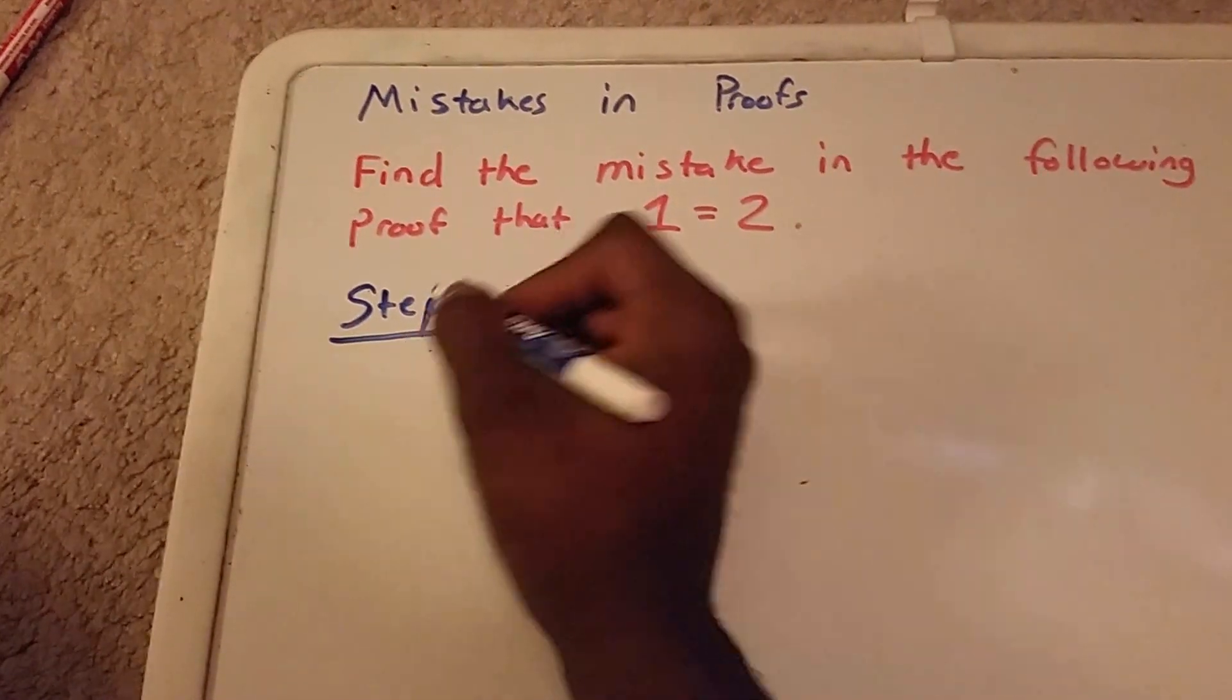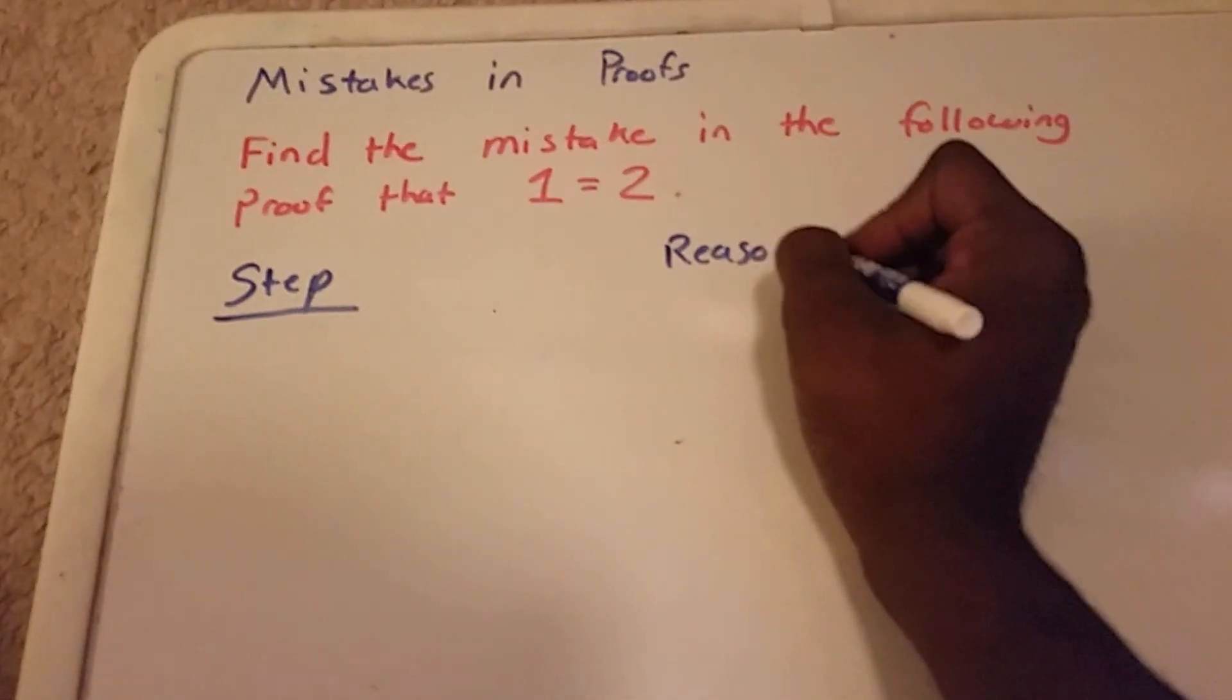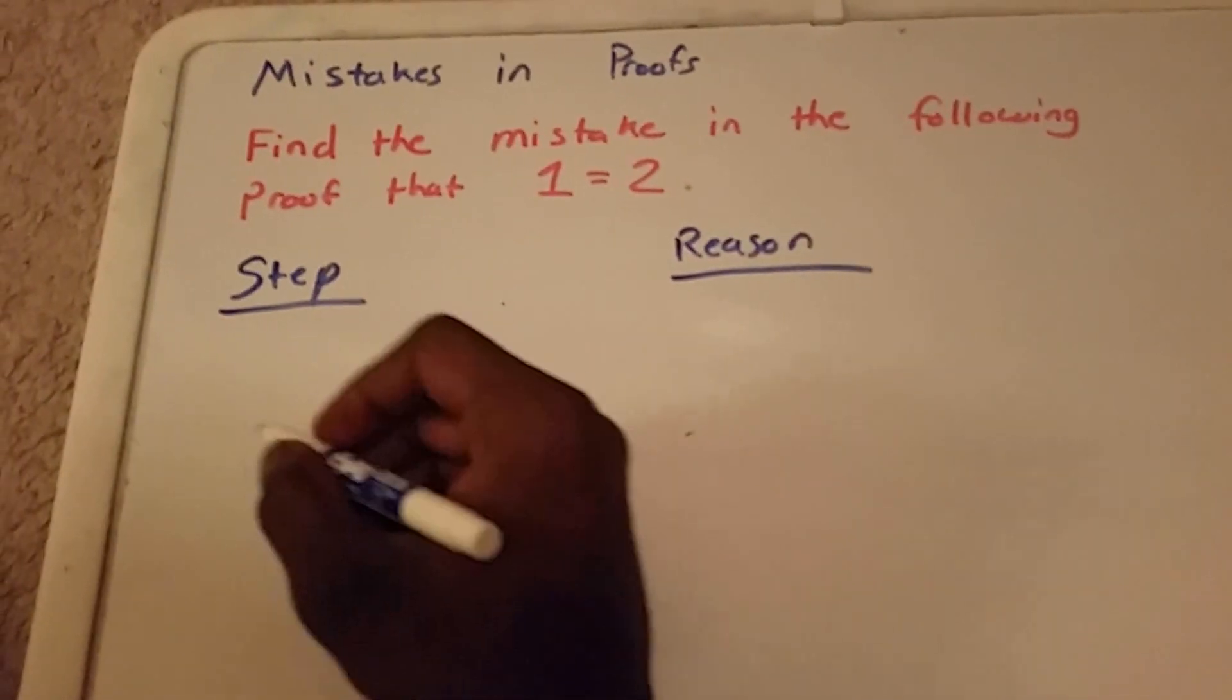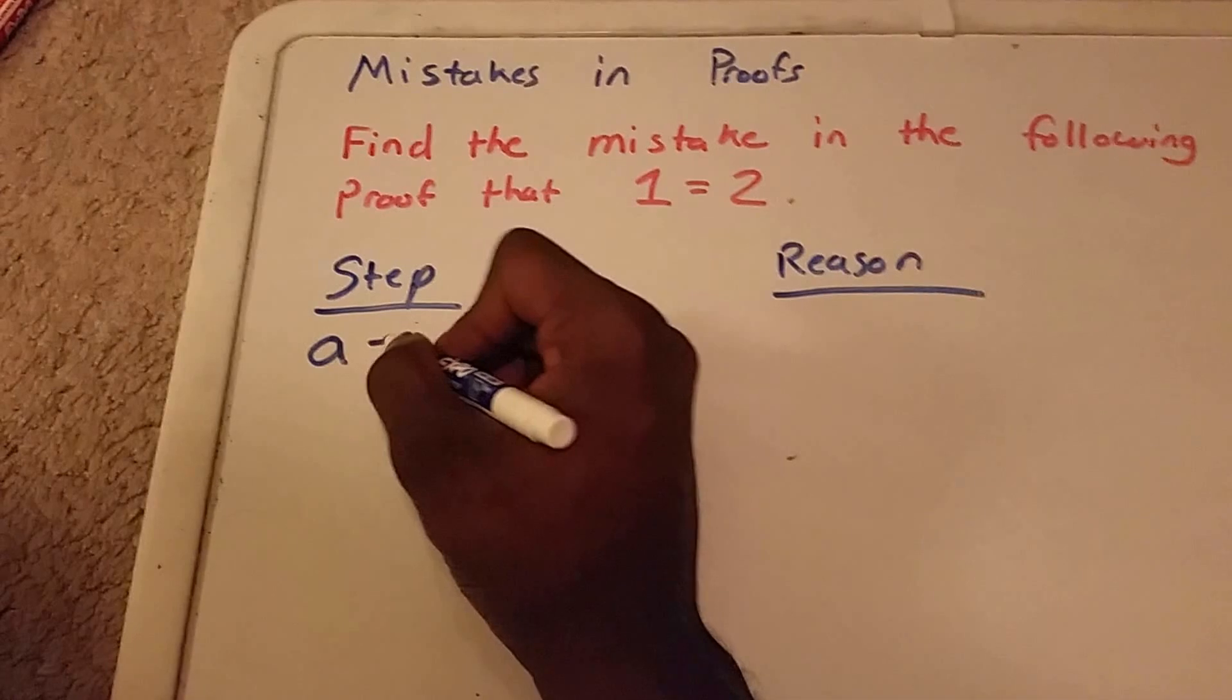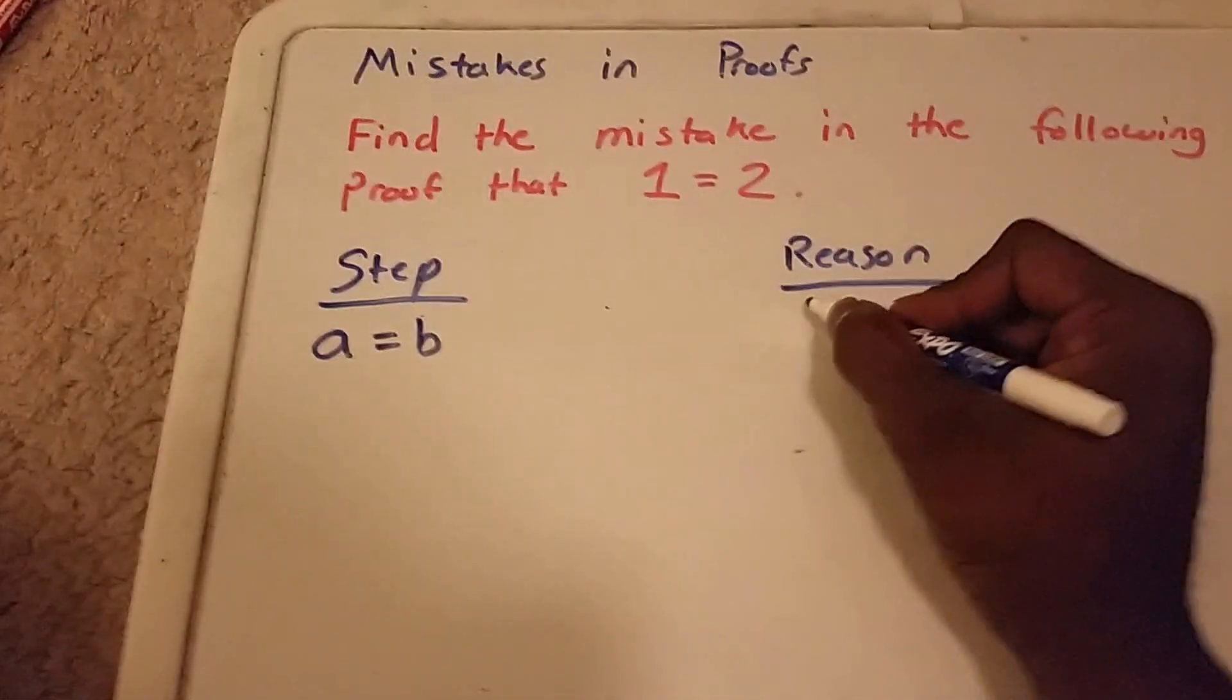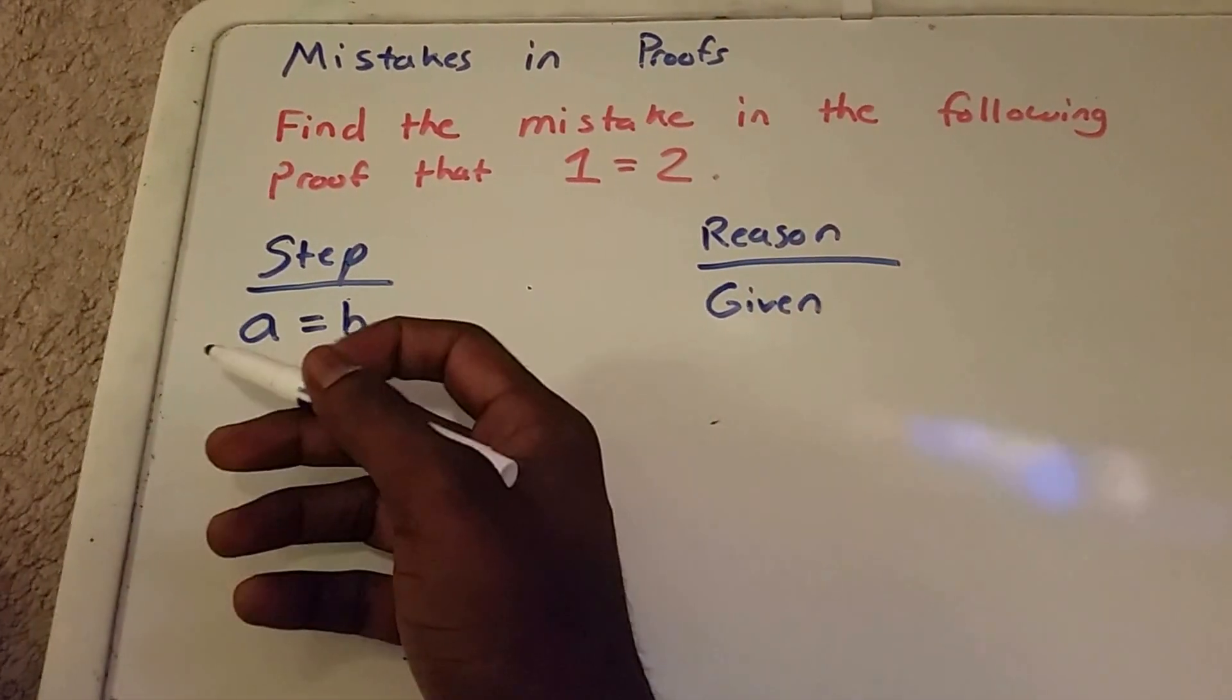And here I'm gonna tell you the reason behind each of these steps. Step 1: I'm going to let a equal b. So this is what's called a given. I'm just giving you that knowledge that a equals b, so that's our first step.